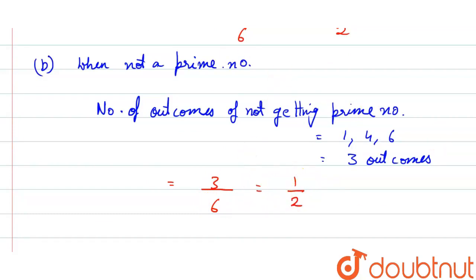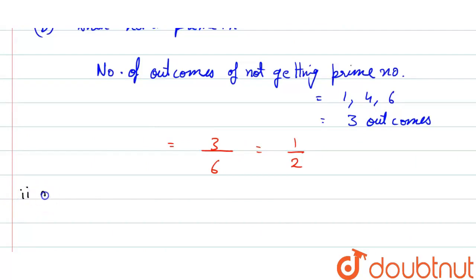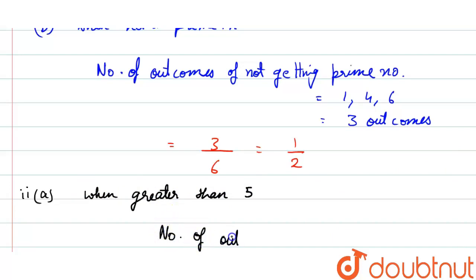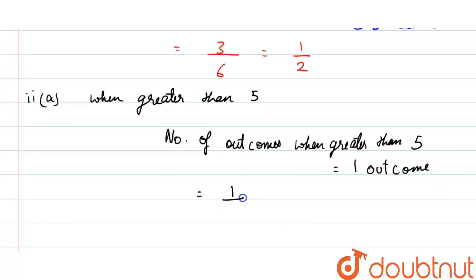Now for case 2, part A — a number greater than 5. In that case, out of the six faces of the dice, we have only one outcome, which is 6. By the formula, probability equals 1 divided by the total outcomes of 6, so we have 1/6 as our answer.